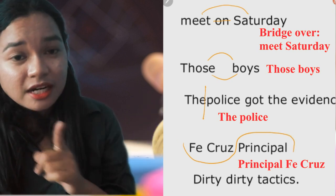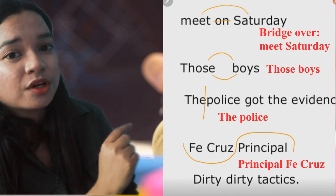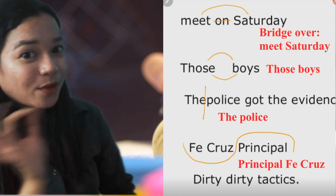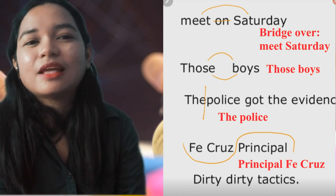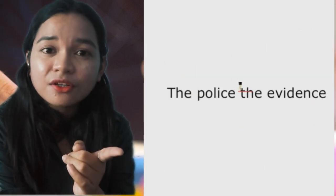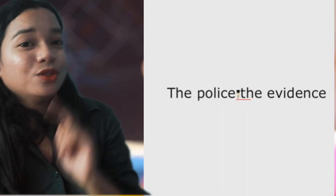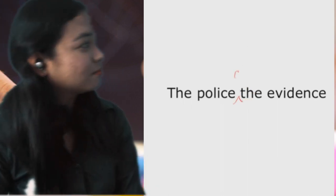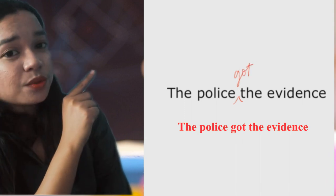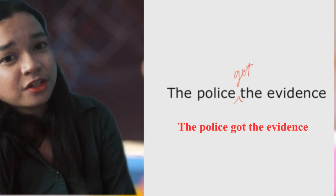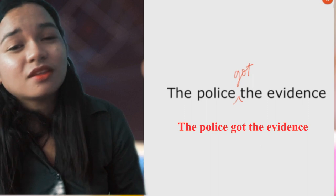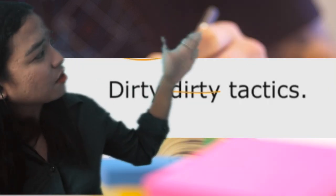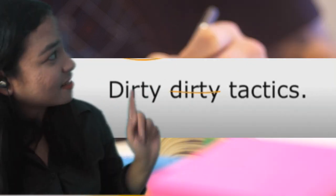Just make sure that the line is below the word you want to transfer to the point. Now, if we need to insert a letter or a word, we can use, again, the inverted V and put the word just right above where you want it to be placed. Now, if you want to delete a word, just slash it out, or you can use this symbol.